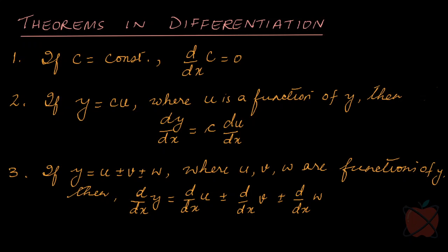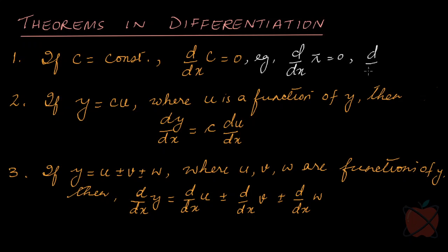In differentiation, we have some theorems. We are not going to discuss all of them, only the important ones. The first theorem says that if c is a constant, then d/dx of c — that means differentiation of a constant — is always 0. For example, d/dx of pi is 0 because pi is a constant, and d/dx of 10 is also 0 because 10 is a constant.